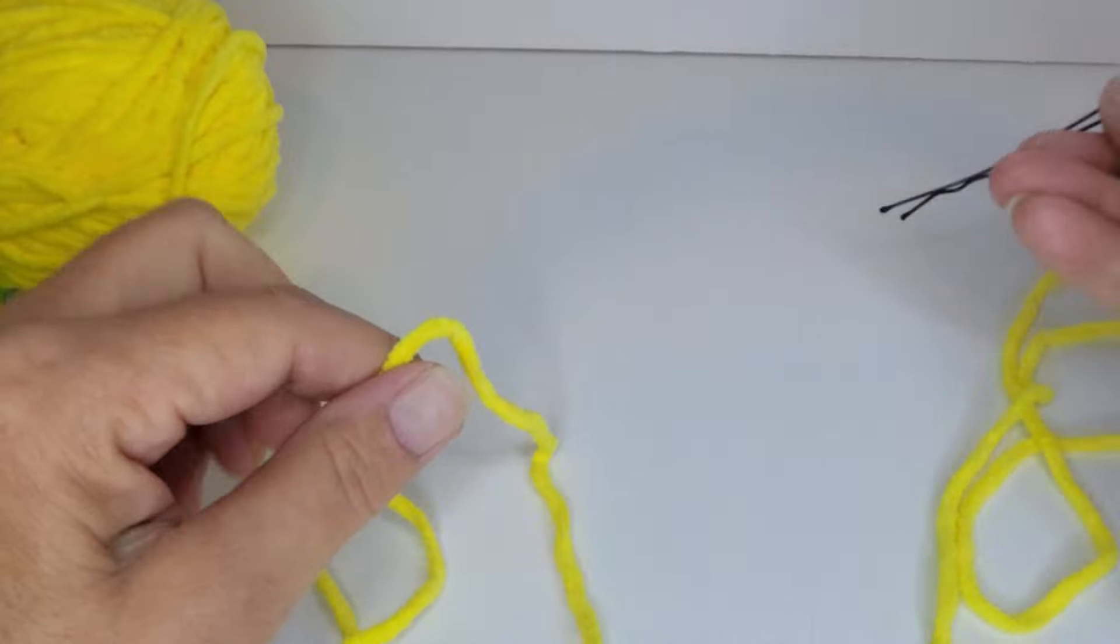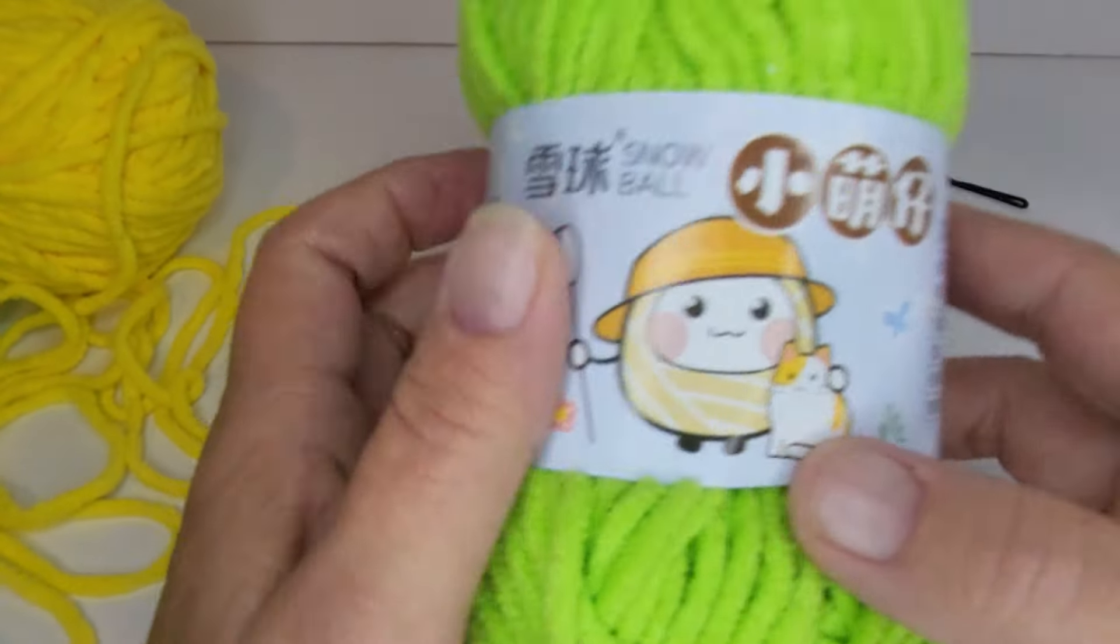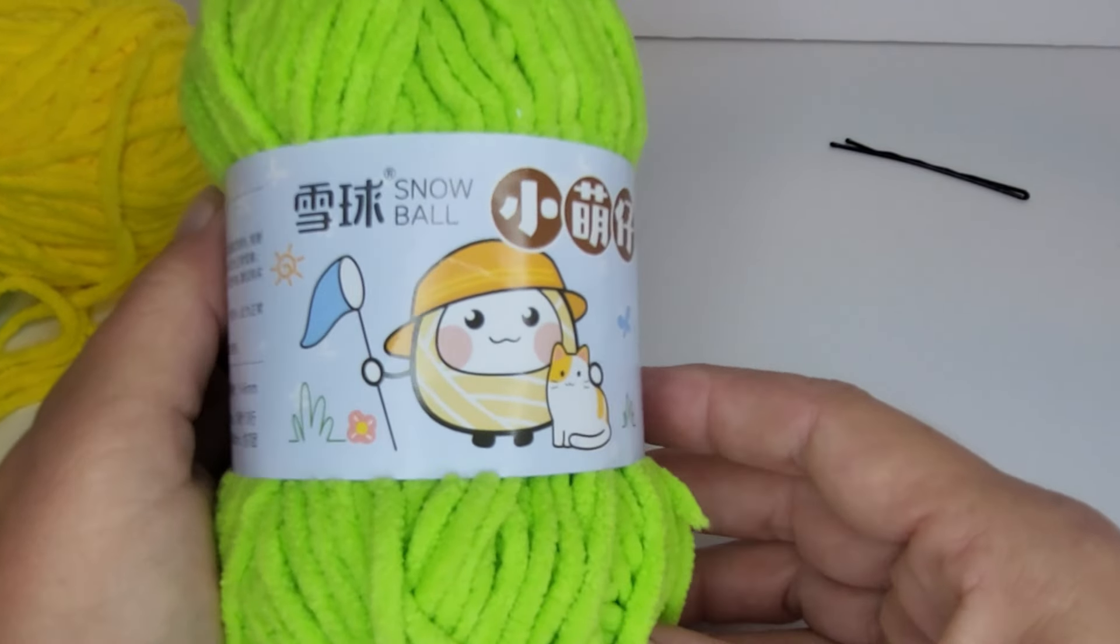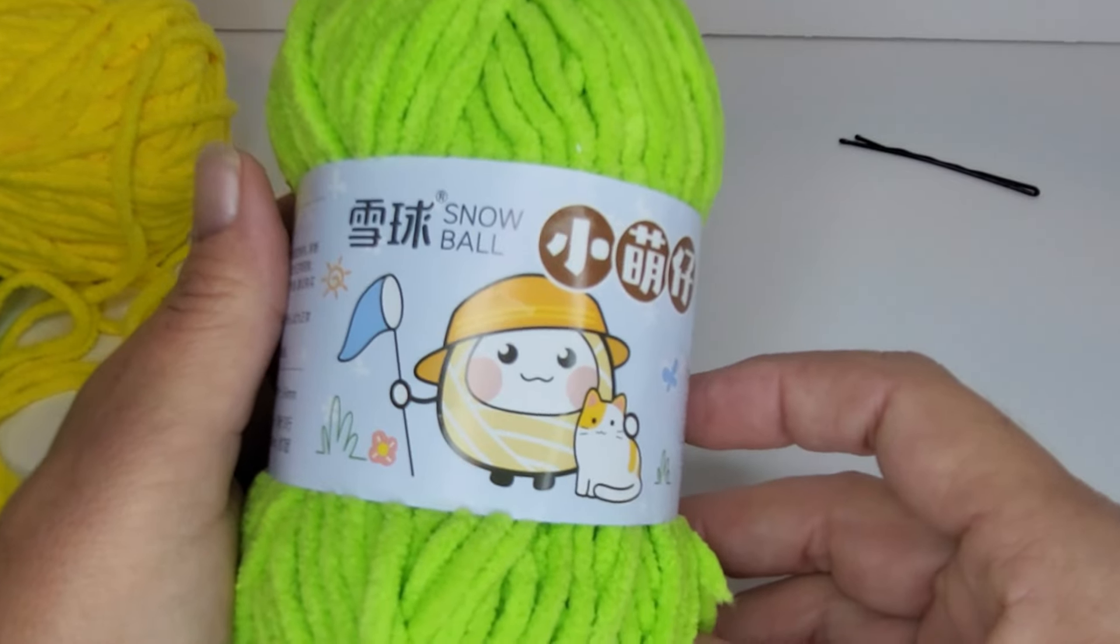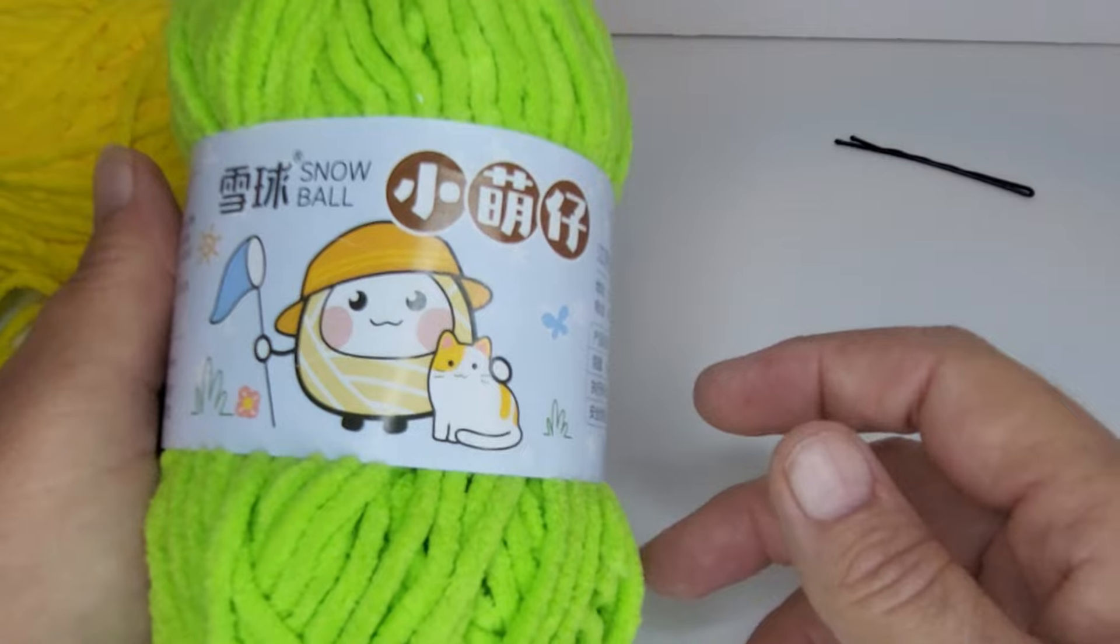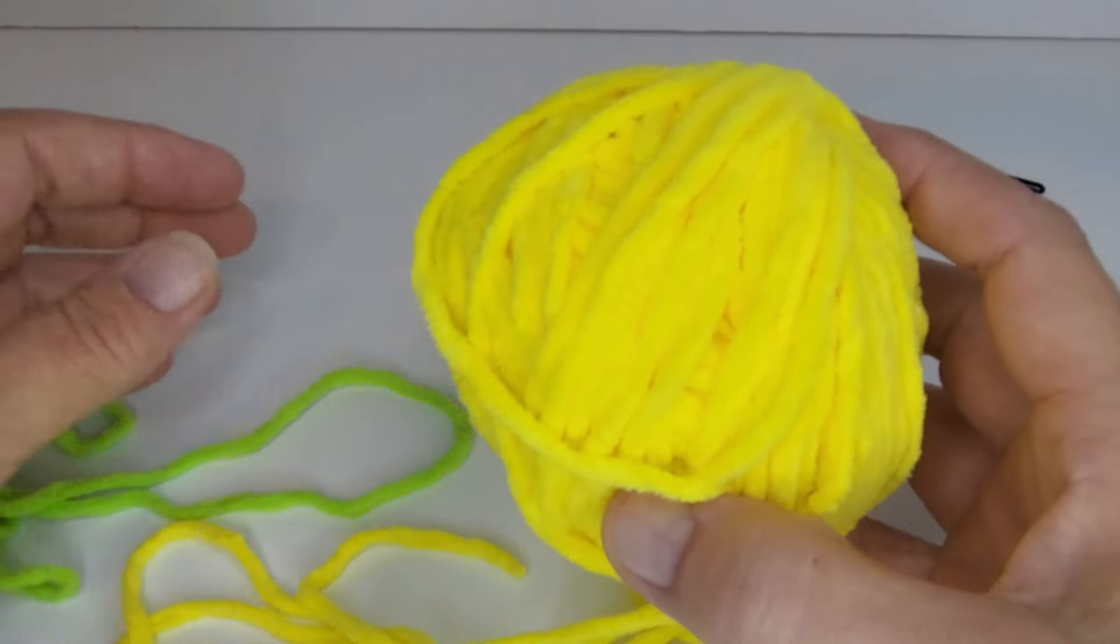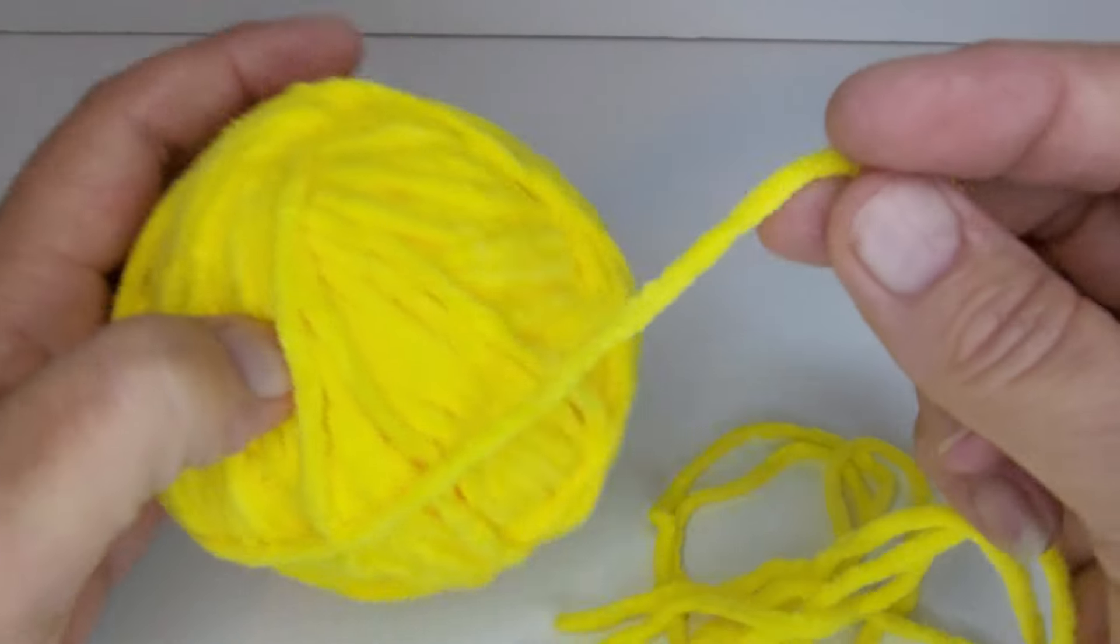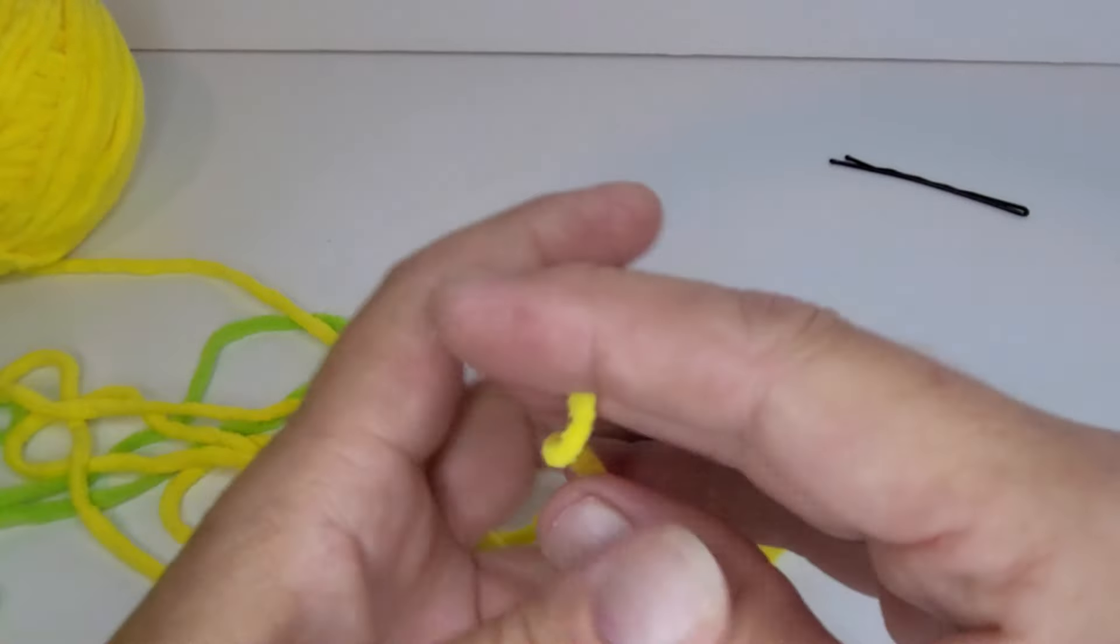You might use a stitch marker if you like. My yarn, I'm using a chenille yarn that actually came from Temu because it has the color that I like. And I can't get that around here. This yarn is not as bright as I like to have it, but it looks really good on camera. So let's get started.